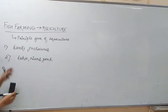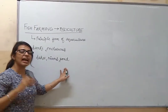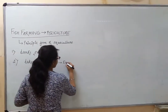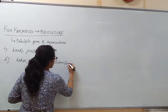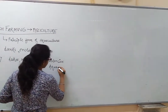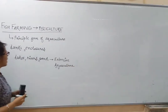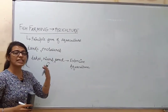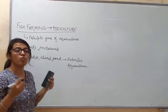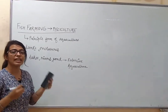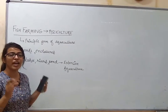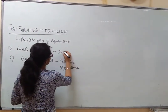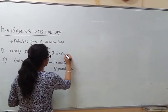When fish culturing is done in natural water bodies like lakes, rivers, or ponds, it is called extensive aquaculture. When it is done in tanks or enclosures in a scientific fashion — where everything is monitored, including breeding and feeding habits — it is called intensive aquaculture.